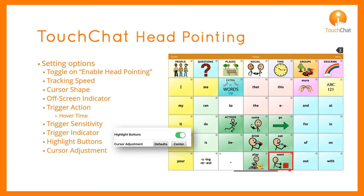There are two options for cursor adjustment. The default will reset the cursor to the default, which would recognize the device, the orientation, and adjust the center, assuming the person is looking straight on at the device.